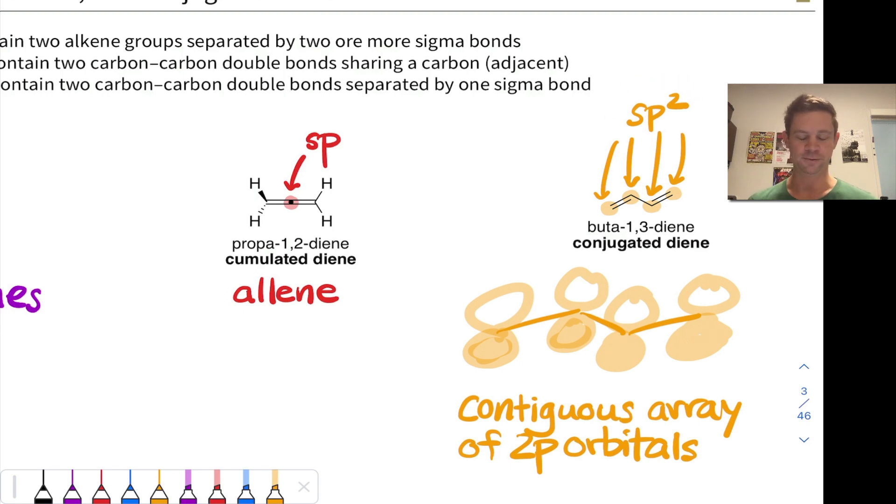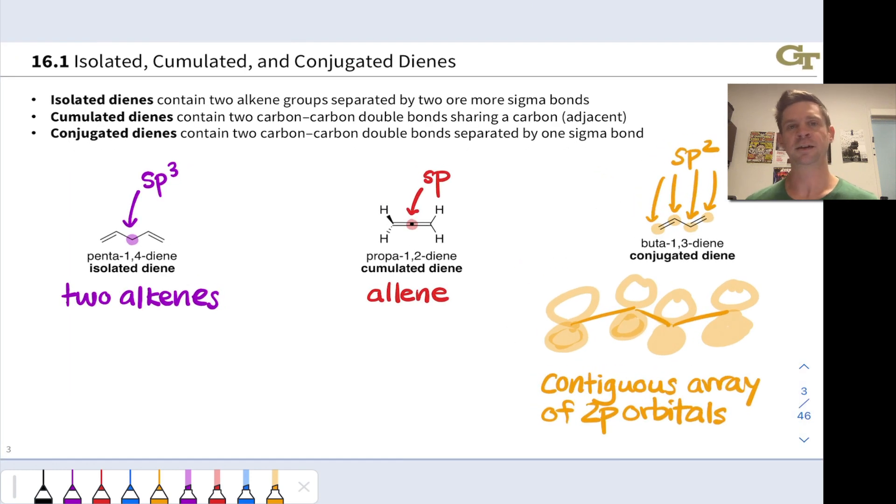We can think of those as unhybridized 2p orbitals left behind after the sp2 hybridization, such that they can overlap and electrons are delocalized over all four atoms. So we've got a delocalized electron situation on our hands here, and that's reminiscent of resonance. We're going to be thinking a lot about resonance as we learn to recognize conjugated systems in molecules.